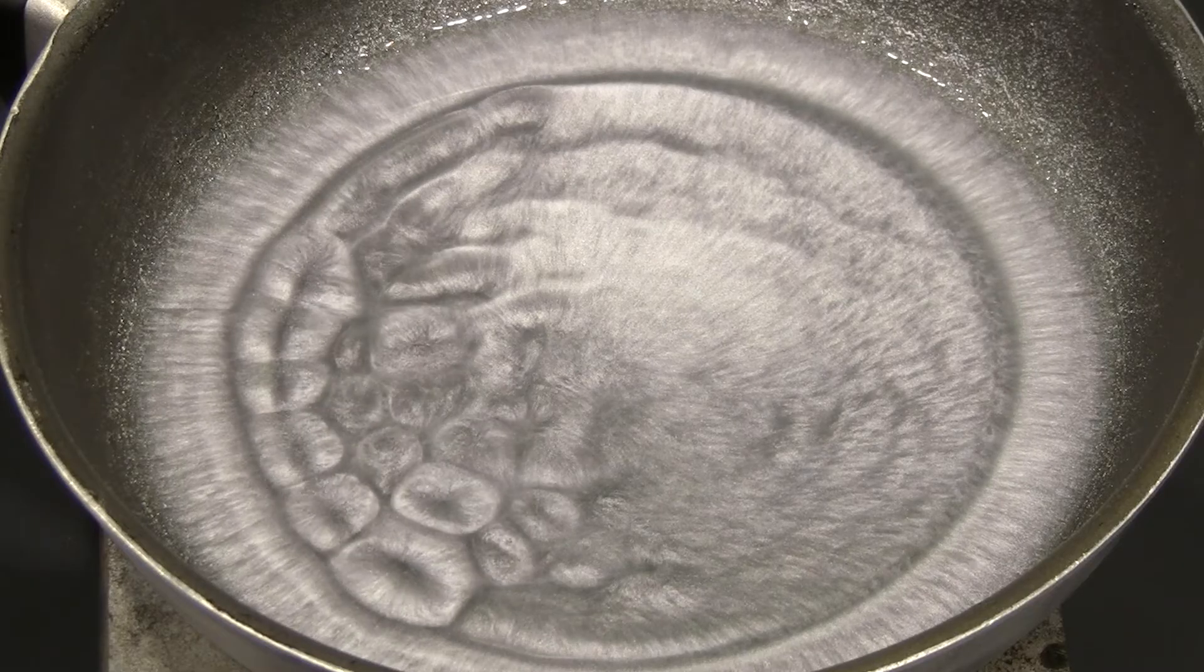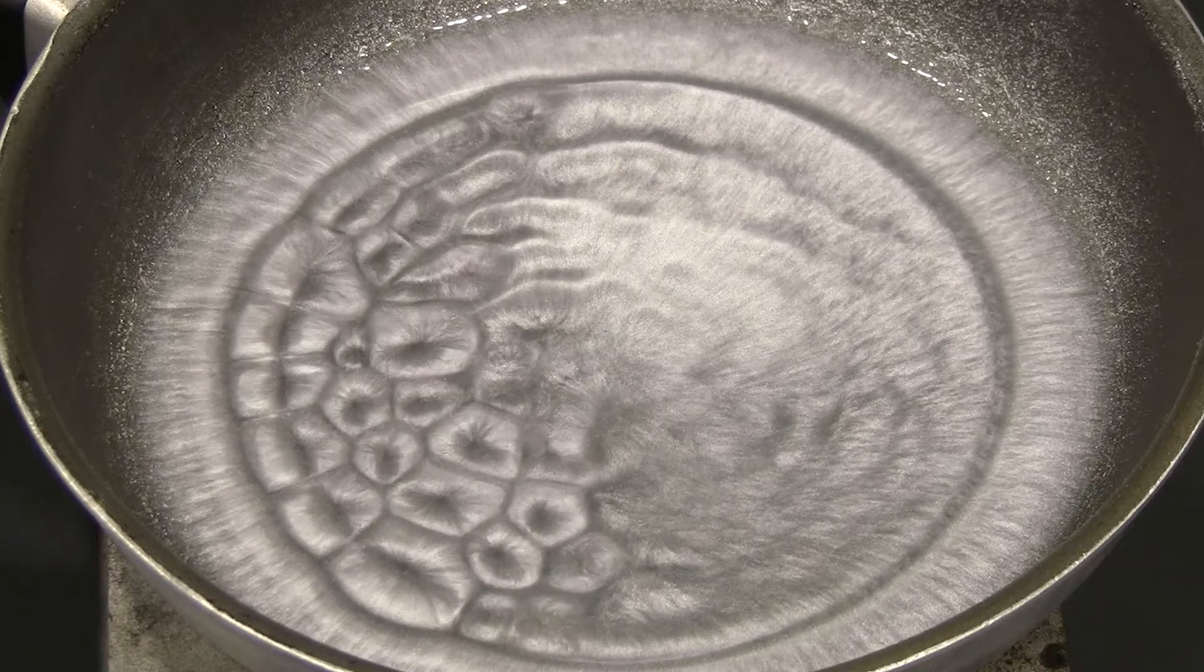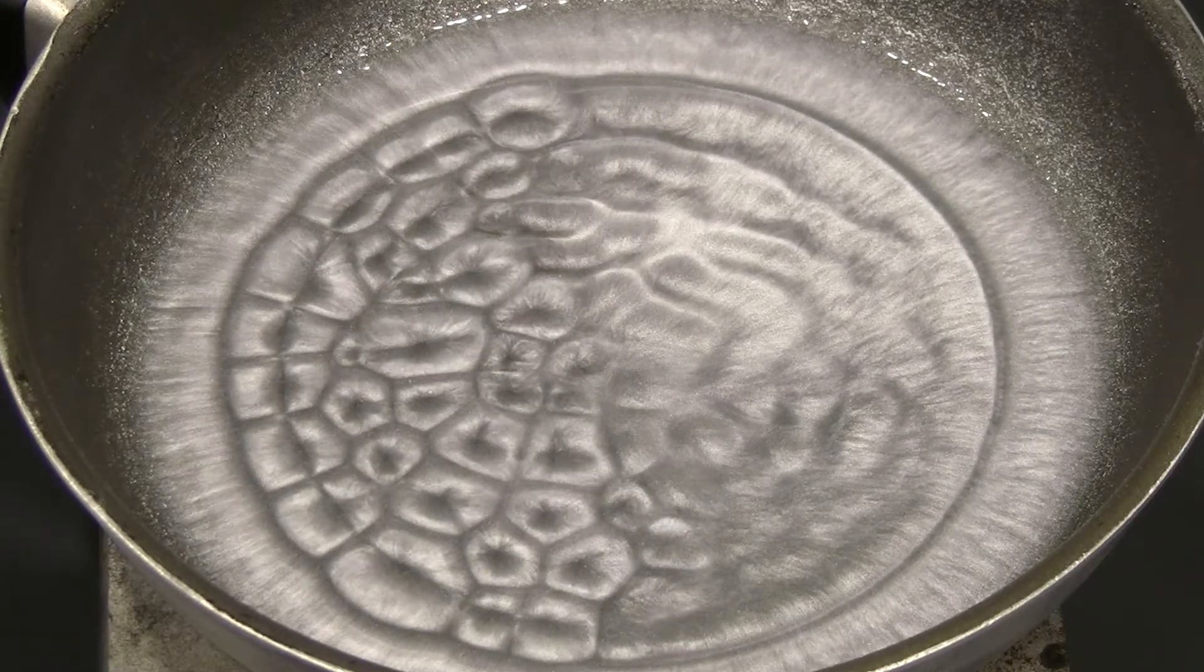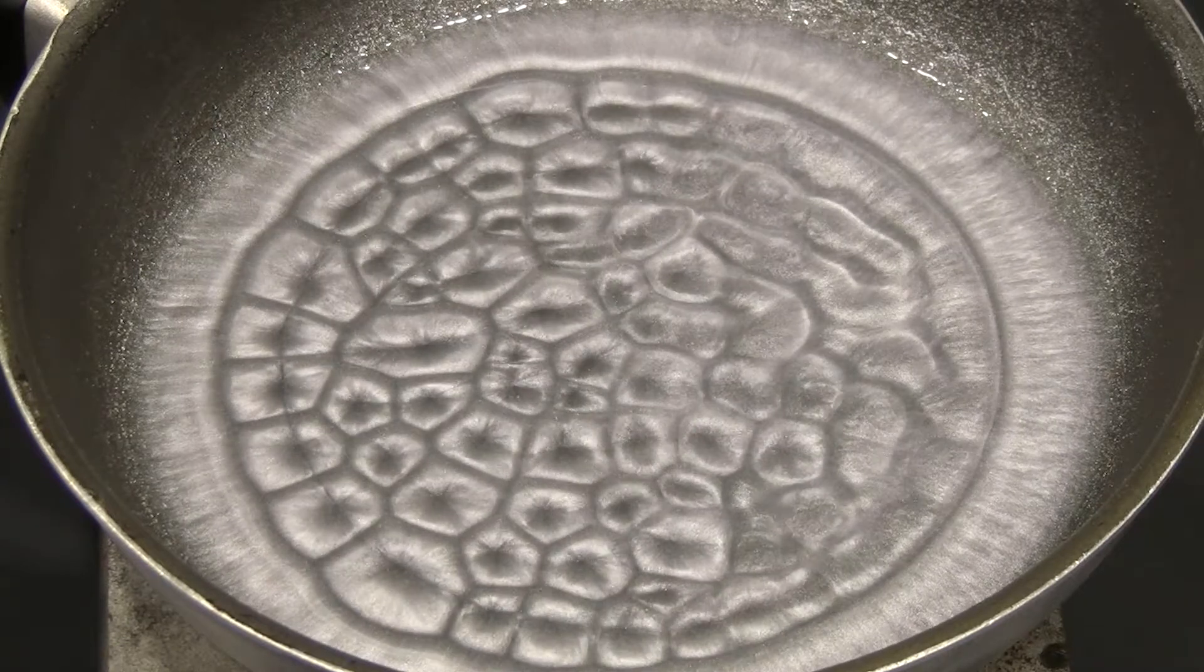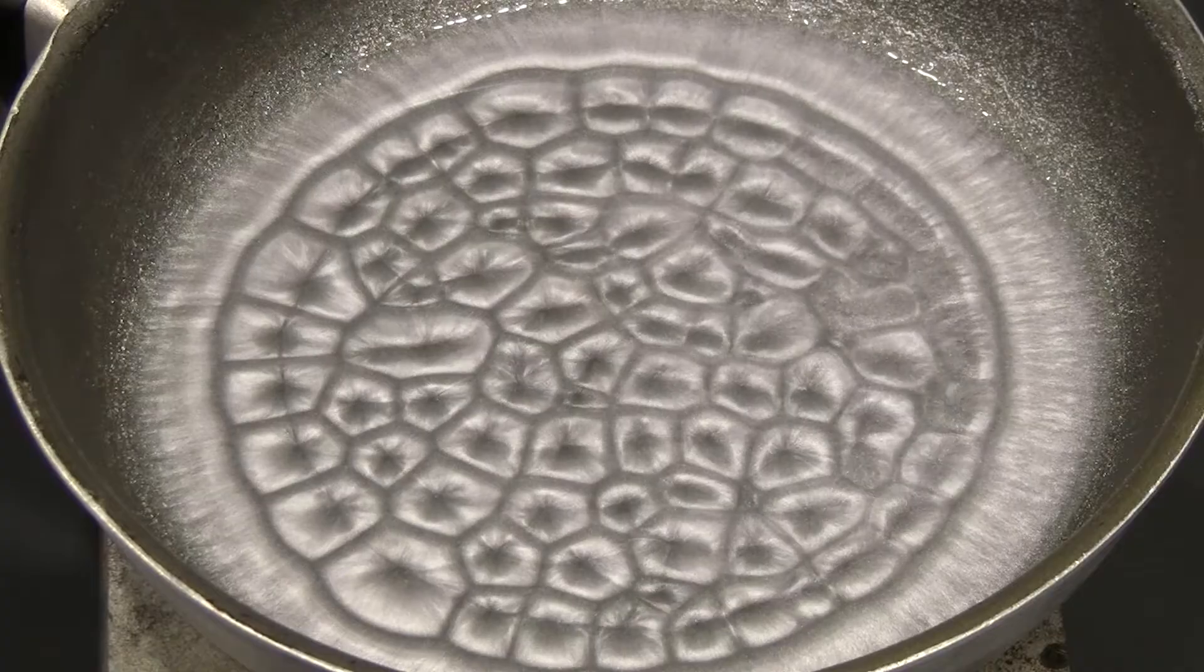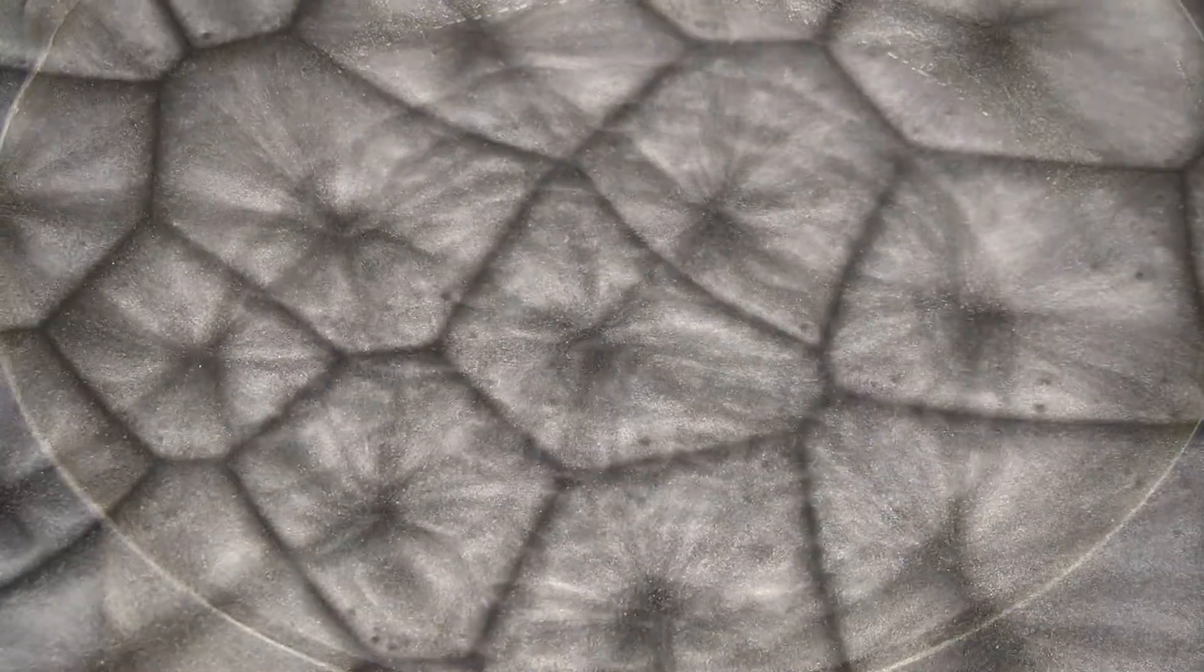As the oil heats up, convection cells are created. Hot material, initially in contact with the bottom of the pan, moves upward and boils over. Cooler material then circulates downward. The aluminum powder serves as a tool that allows us to see the circulation.